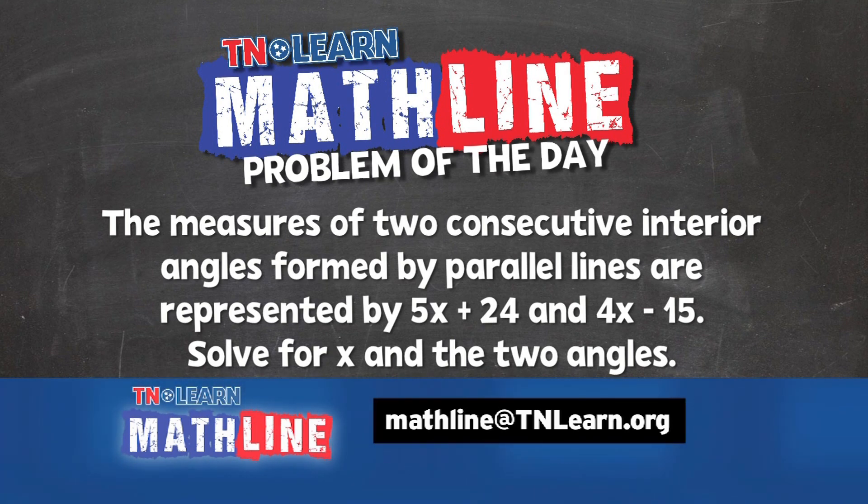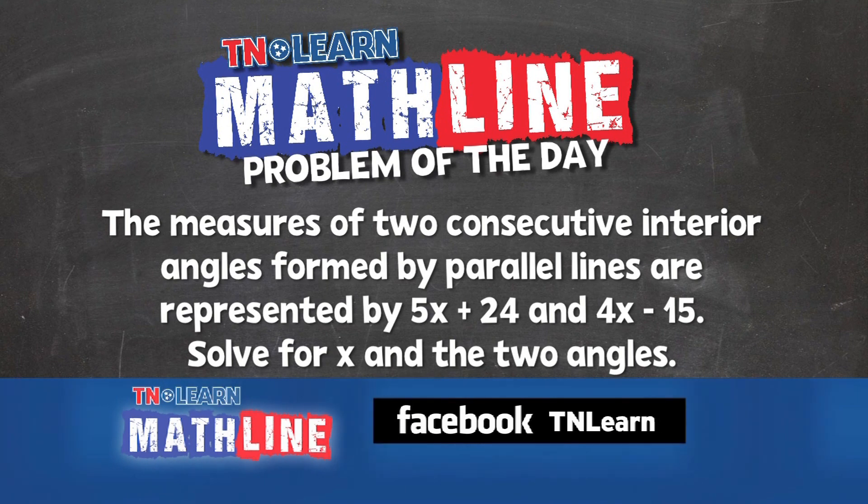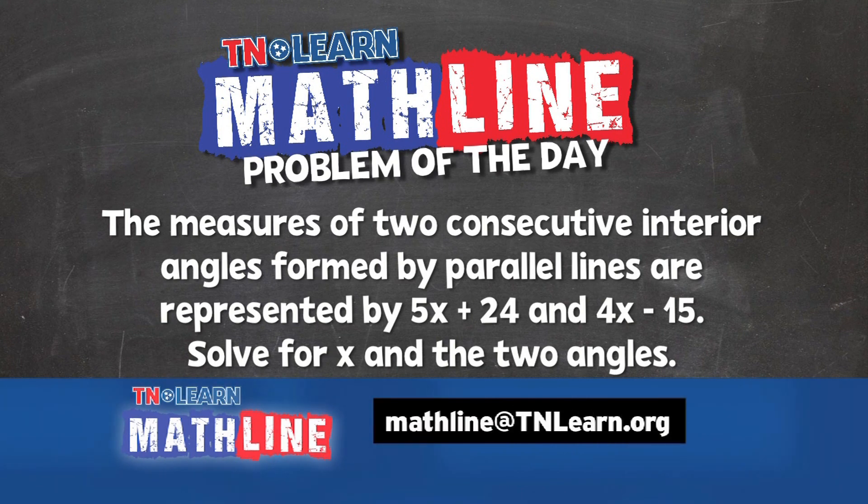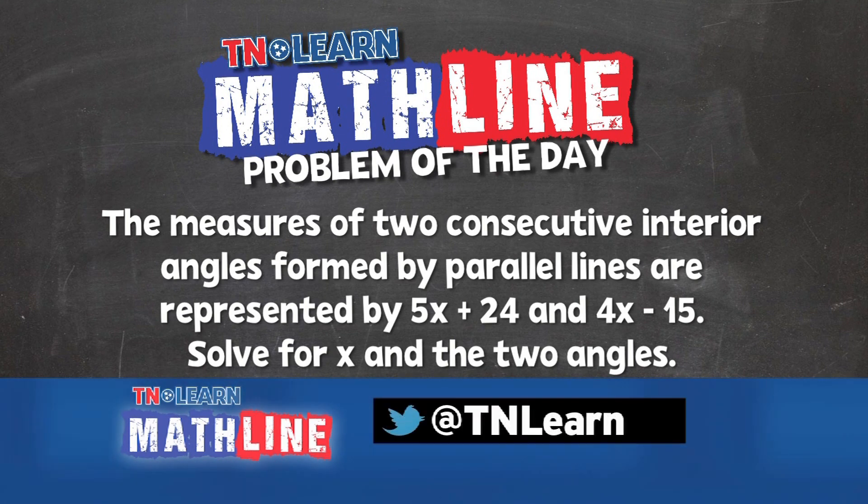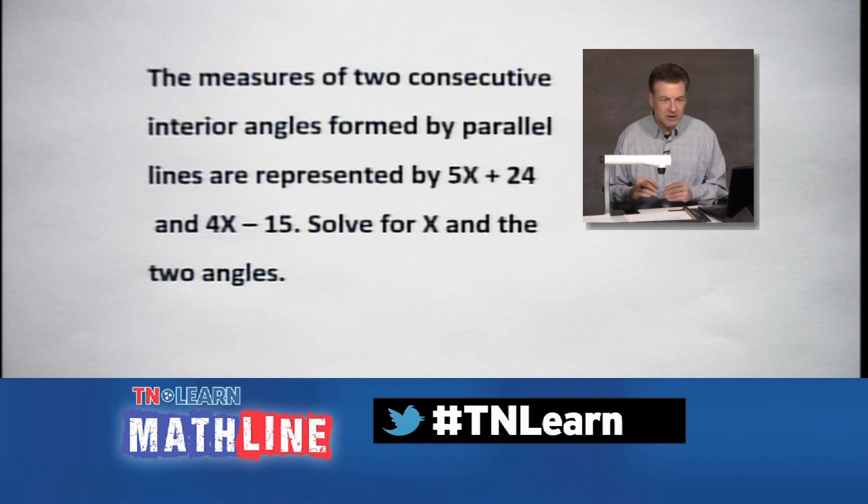Let's try it one more time. The measures of two consecutive interior angles formed by parallel lines are represented by 5x + 24 and 4x - 15. We're going to solve for x and the two angles. Let's take a look at this one. It's got a little bit of work. It's all about geometry here.